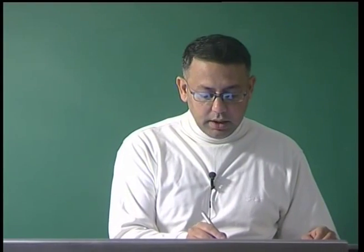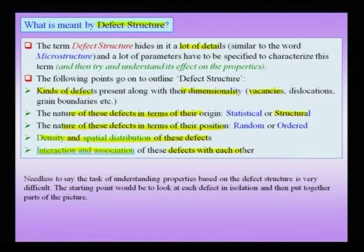Whether I am putting a component into service or doing processing to engineer the material to have a desired defect structure, I need to understand how the defect structure evolves with time. Terms like density and location can be used to understand the spatial distribution of these defects. Last but not least, I need to understand the interaction and association of these defects with each other.